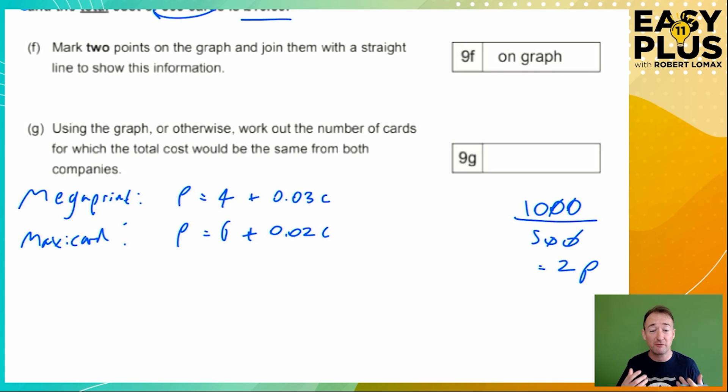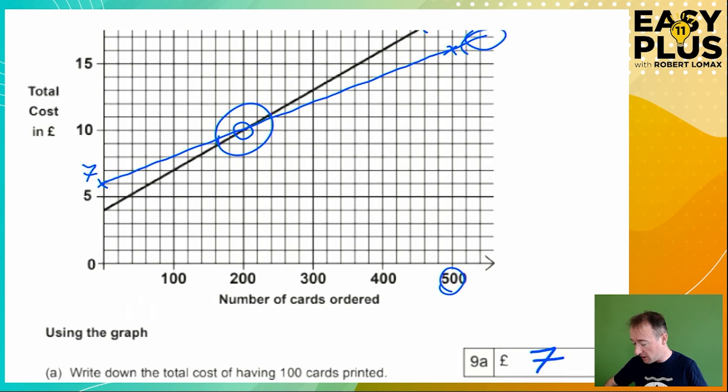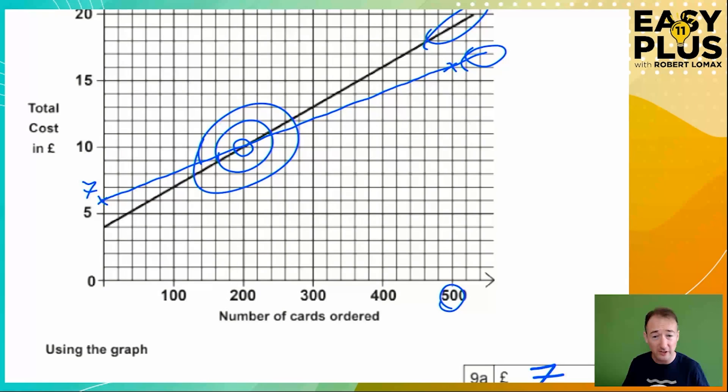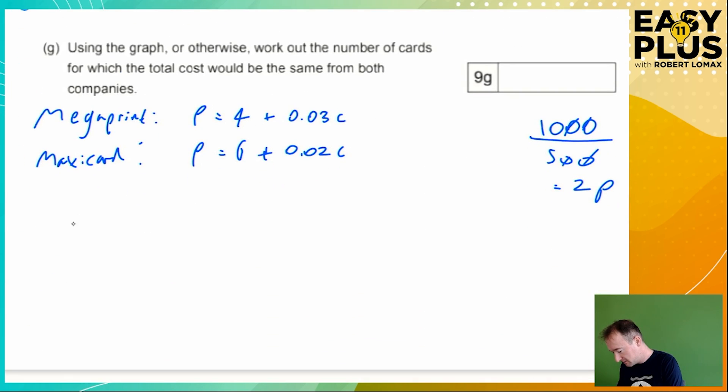Now here's the crucial thing for you to understand. We're looking for the point where, if we go back to our graph to have a look, where the prices are the same. We've already found it using the graphs, but now we're checking it with the algebra to get the exact value, make sure we're absolutely right. It's not 201 cards, it's not 195 cards, it really is 200 cards. So we're looking for the point where the prices are the same, the point where p equals p. The two p's are identical. So if the p's are identical, if they have the same value, then these things must also have the same value.